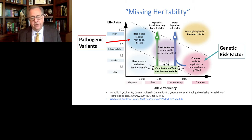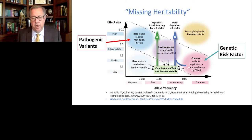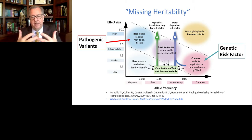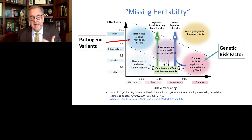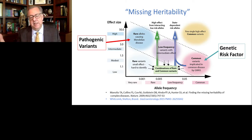We addressed this in a paper shown at the bottom of your slide, and what we argue is that the missing heritability is actually two genes at once coming together, or a state occurs in which a very important mutation is silent but suddenly becomes important and drives disease.